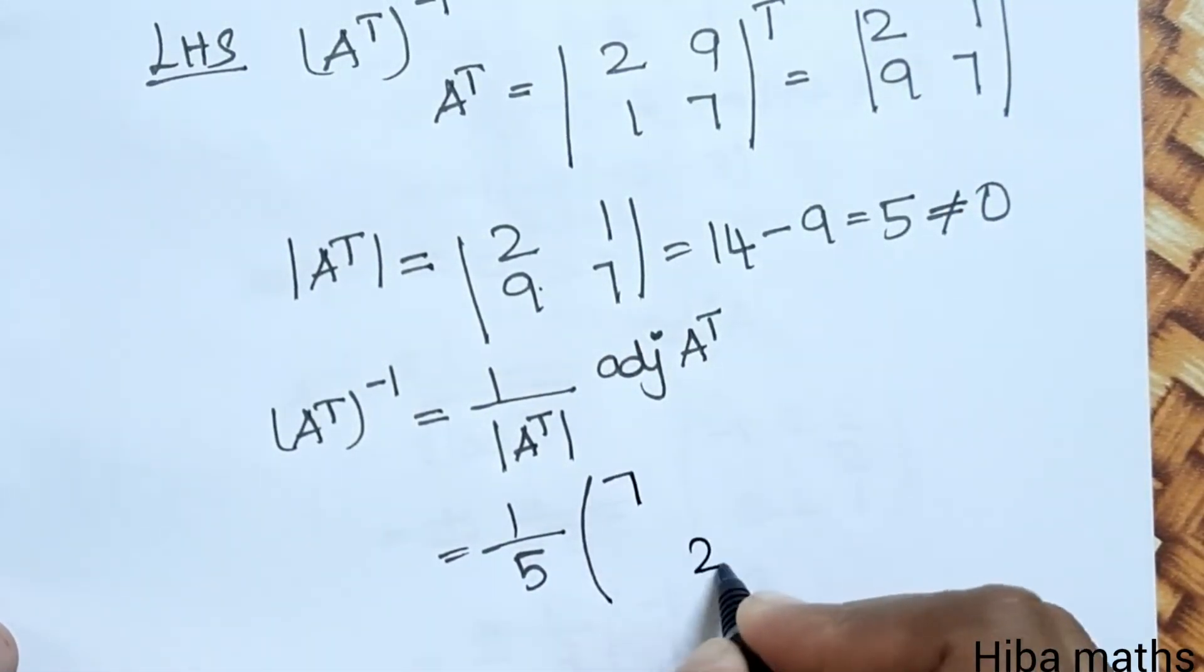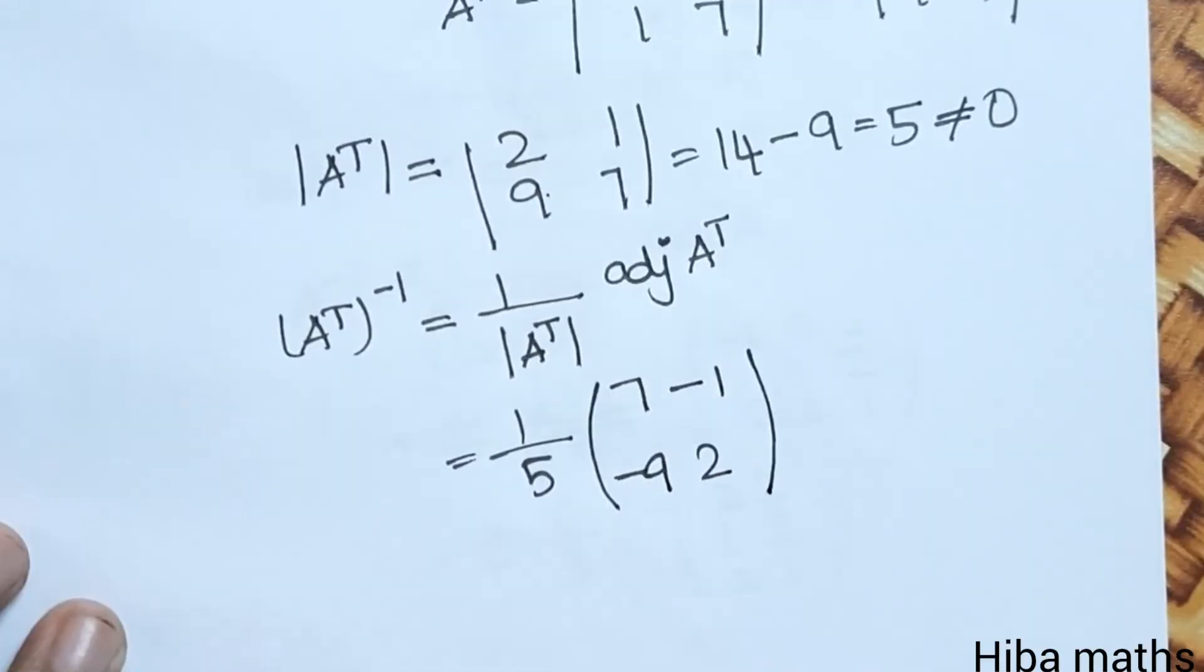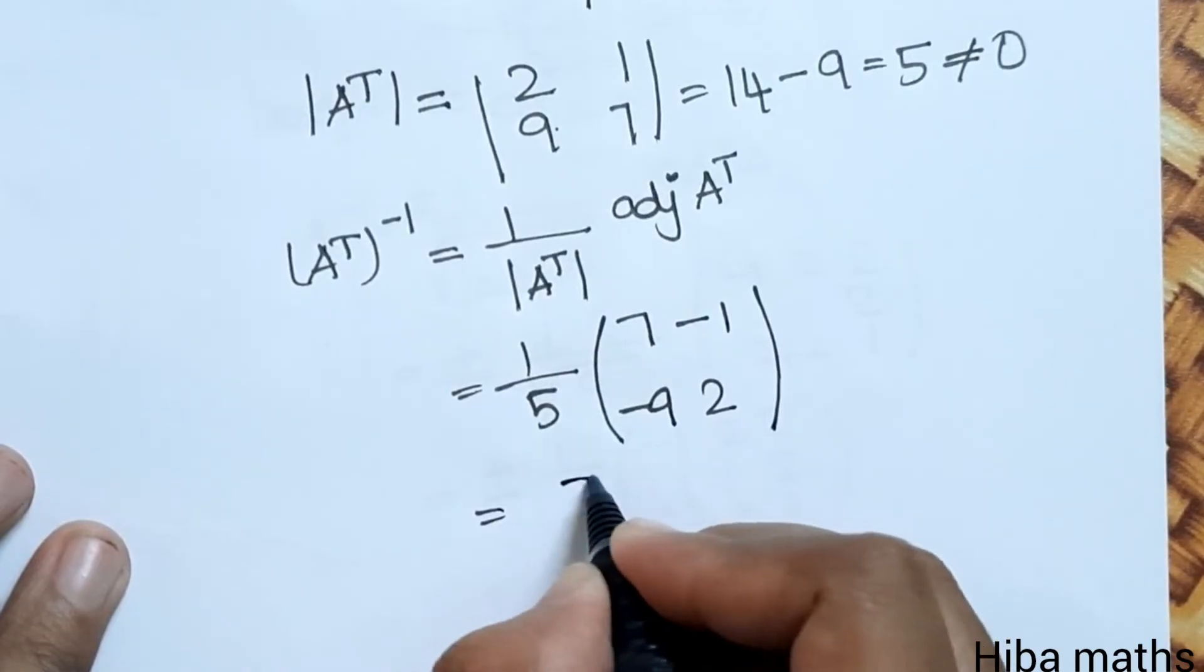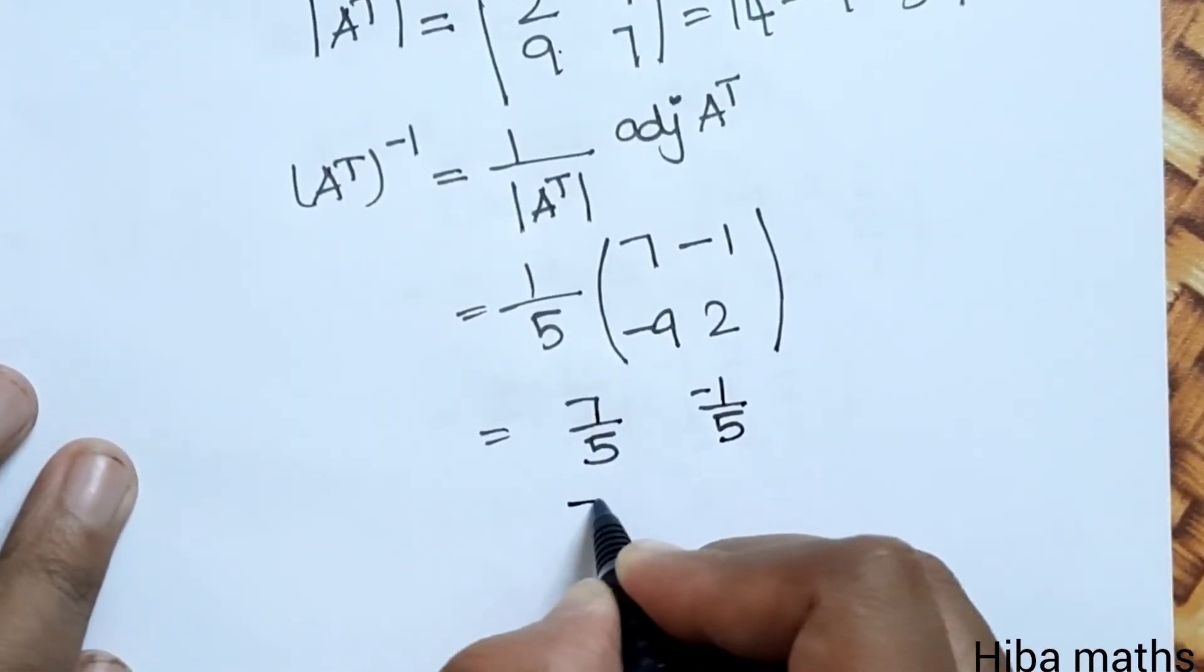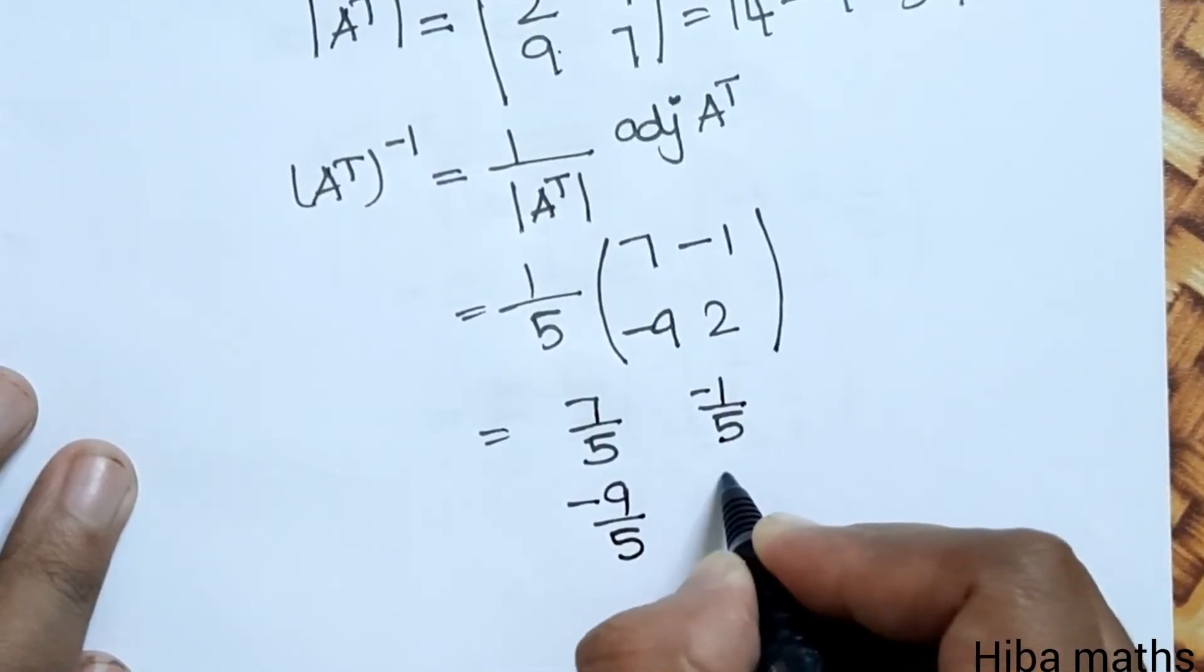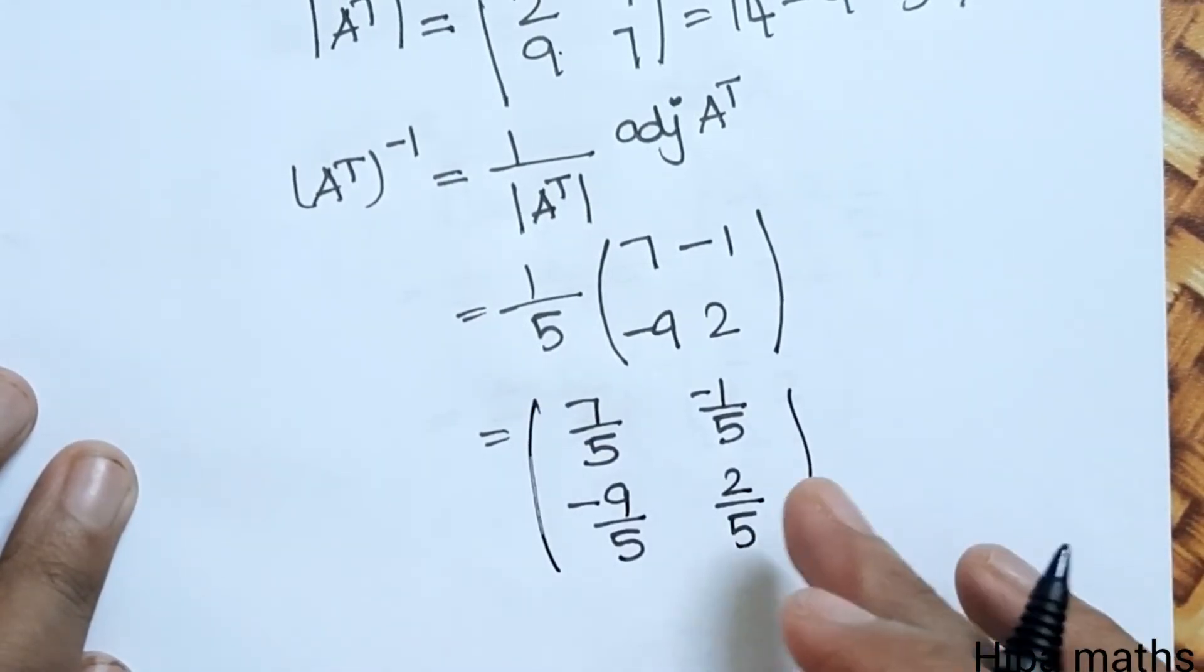So 7, 2, 1, 9 becomes 7, minus 1, minus 9, 2. In the last step, this is 5 inside multiple: 7 by 5, minus 1 by 5, minus 9 by 5, 2 by 5.